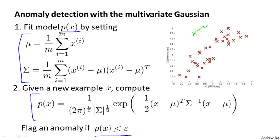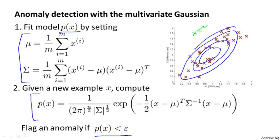It turns out that if you fit a multivariate Gaussian distribution to this dataset — just the red crosses, not the green example — you end up with a Gaussian that places lots of probability in the central region, slightly less probability further out, and very low probability at the point that's way out here. So if you apply the multivariate Gaussian distribution to that example, it will correctly flag it as an anomaly.